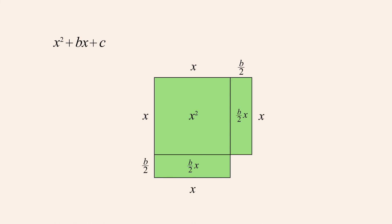Then, all we need to complete the square is a small square with sides of length b over 2, and thus an area of b over 2-squared. So, if we make the value of a quadratic's constant term b over 2-squared, then that quadratic will be a perfect square.